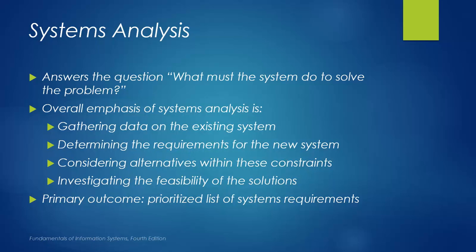The information gathered will include system constraints, limitations, and assumptions. Part of the analysis is to look at design alternatives within these constraints and investigate the feasibility of each solution or design alternative. The outcome of the analysis will be a list of system requirements, which will be translated later into design specifications, features, and functions.